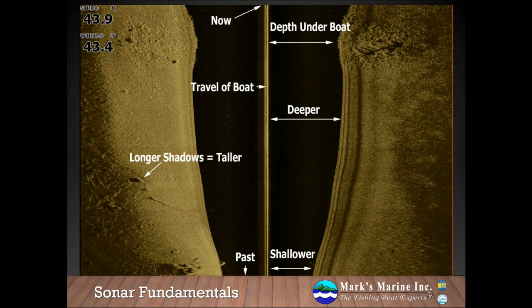Let's learn how to read the sidescan beam. I find it useful to think about it like taking your traditional sonar and rotating it 90 degrees counterclockwise. Now is at the top center of the screen, and the furthest point in the past is at the bottom center of the screen. The white line down the center of the screen is the travel of the boat, and the black area mirrored to either side is the vertical water column directly under the boat.